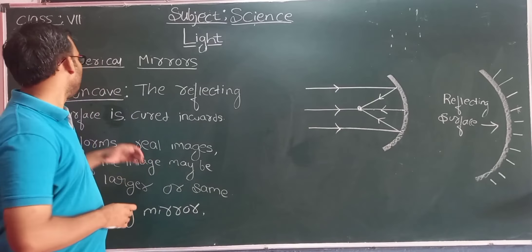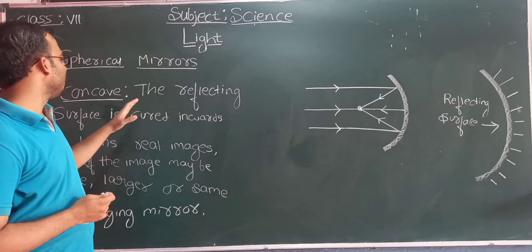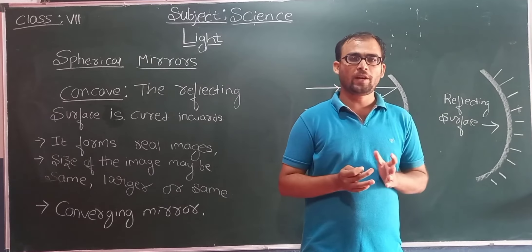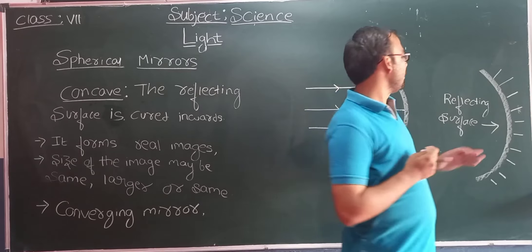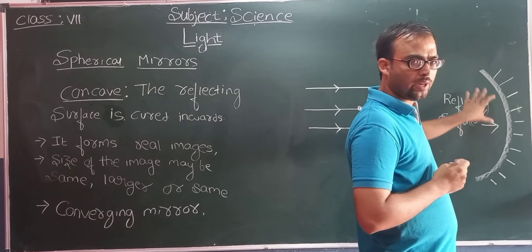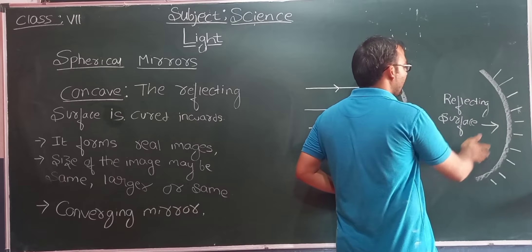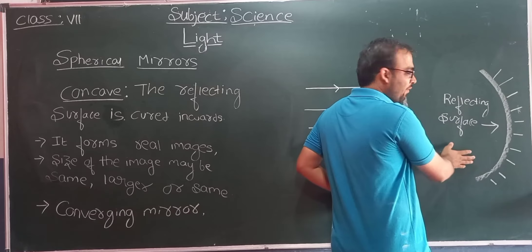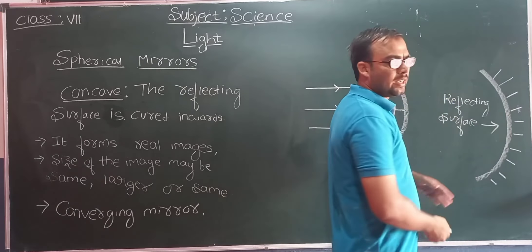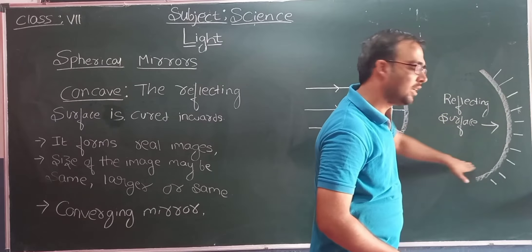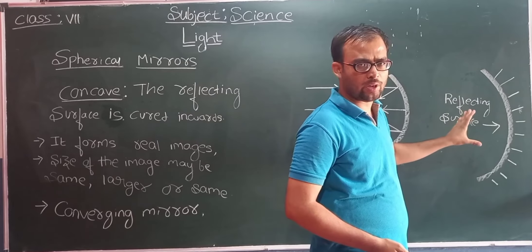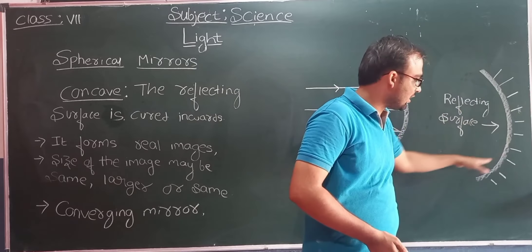Let us discuss about the concave mirror. In a concave mirror, the reflecting surface is curved inward. Imagine this is a curved mirror — this part is the reflecting surface, so here you can see your image. The reflecting surface is curved inward, and this kind of mirror is known as a concave mirror, because the reflecting surface is curved inward.